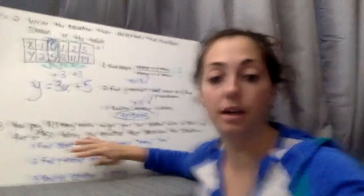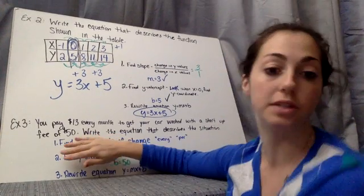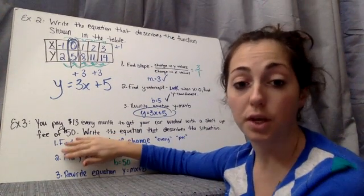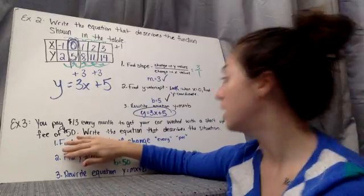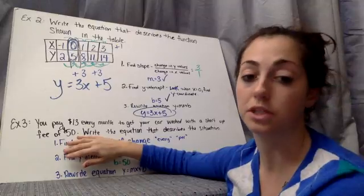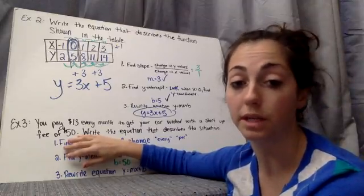So we're going to do a lot of problems like example 3. This is super important to understand. You pay $13 every month to get your car washed with a startup fee of $50. Write the equation that describes the situation. So again, an equation.